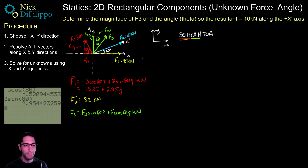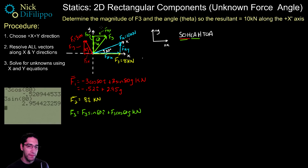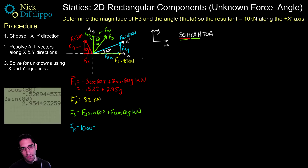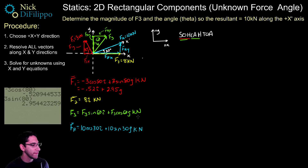Now we also need to break up the resultant force. The resultant is 30 degrees above the horizontal, so FRx = 10·cos(30°) i and FRy = 10·sin(30°) j, both positive since they point to the right and upward respectively. These are also in kilonewtons. That completes step two — resolving all vectors along x and y directions.